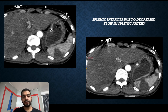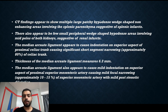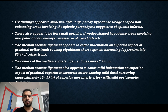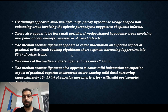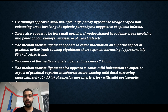On CCT axial images, we can see multiple wedge-shaped hypodense areas in the splenic parenchyma suggestive of splenic infarcts, and few small peripheral wedge-shaped hypodense areas involving the mid poles of both kidneys consistent with renal infarcts. The median arcuate ligament caused indentation on the proximal celiac trunk causing significant short-segment narrowing, and also appears to indent the proximal superior mesenteric artery causing focal mild narrowing with mild post-stenotic dilatation.